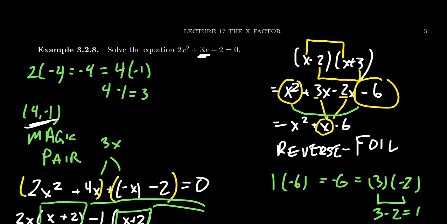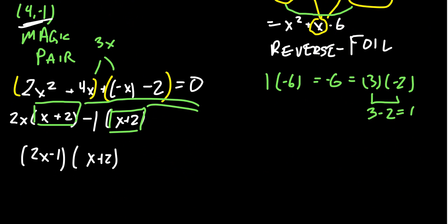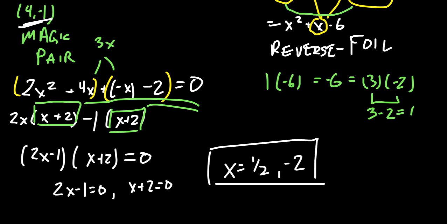And that is exactly the thing we started off with — we have the correct factorization. And so when we set this thing equal to zero, we can now apply the zero product property. We're going to get that two x minus one equals zero or x plus two equals zero. Solving the first one, we add one and divide by two to see that x equals one half. And then the other one, we subtract two to get that x is negative two. We've now found the correct solutions to this quadratic equation.